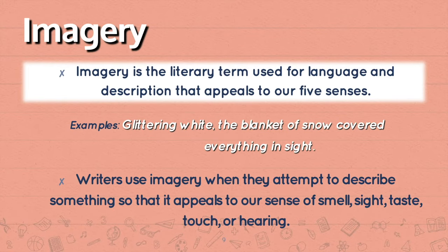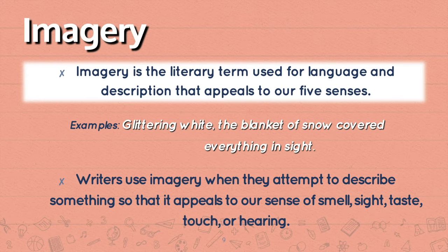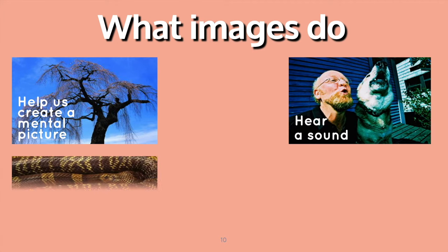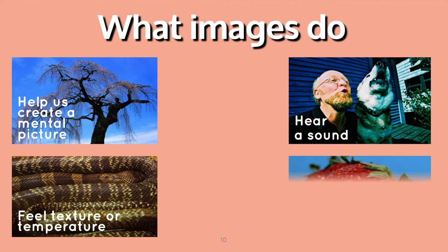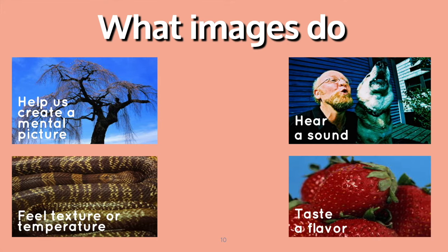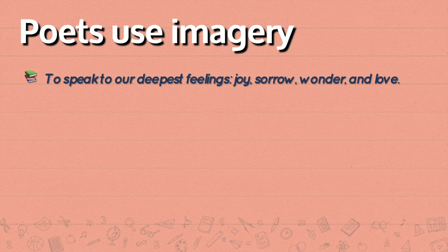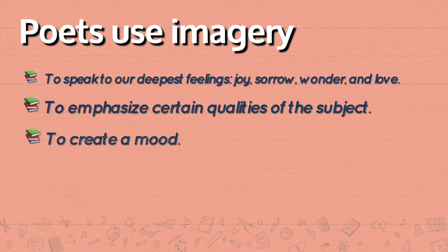Imagery is the literary term used for language and description that appeals to our five senses. Example: 'Glittery in white, the blanket of snow covered everything in sight.' Writers use imagery when they attempt to describe something so that it appeals to our sense of smell, sight, taste, touch, or hearing. Images help us create a mental picture, hear a sound, feel texture or temperature, taste the flavor, and smell. Poets use imagery to speak to our deepest feelings — joy, sorrow, wonder, and love — to emphasize certain qualities of the subject and to create a mood.